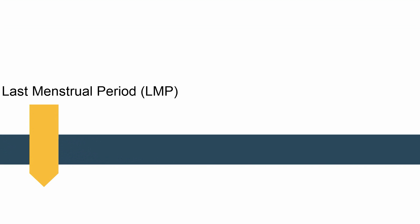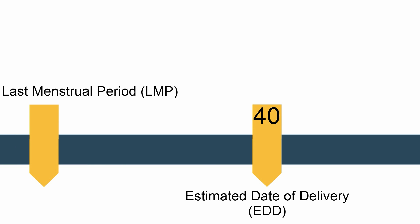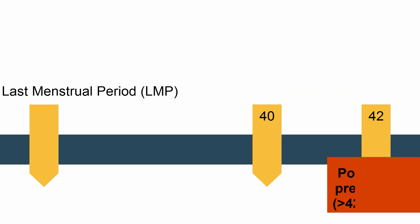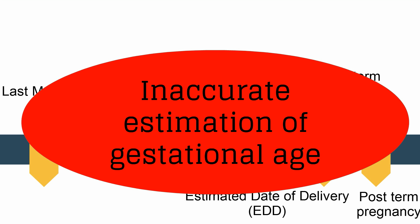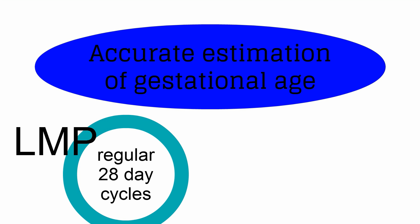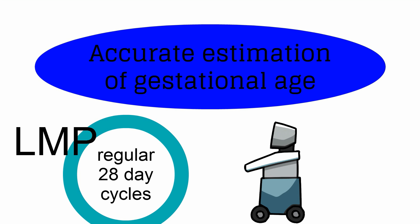We date pregnancies using menstrual dating. The estimated date of delivery is calculated as 40 weeks past the first day of the last menstrual period. Late-term pregnancy is defined as one that has reached between 41 weeks 0 days and 41 weeks 6 days. A post-term pregnancy is defined as beyond 42 weeks. The most common cause of post-term pregnancies is inaccurate estimation of gestational age. The patient's LMP date can accurately predict the EDD if she has regular 28-day cycles. Ultrasound helps more accurately determine the EDD when used in conjunction with LMP dating.